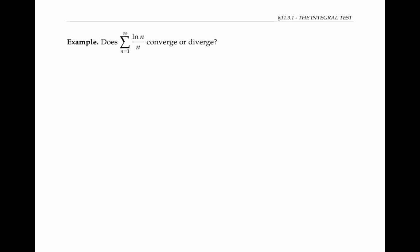Here's an example of the integral test in action. We want to know if the sum from n equals one to infinity of ln n over n converges or diverges. So let's look instead at the integral from one to infinity of ln of x over x dx. This is a continuous function, because it's the quotient of two continuous functions, and we're starting at an x value of one, so we don't have to worry about the denominator being zero.